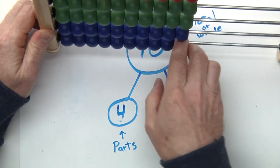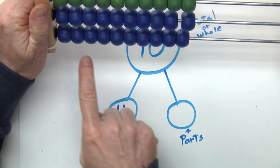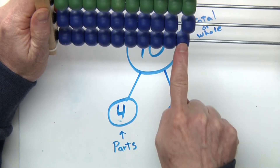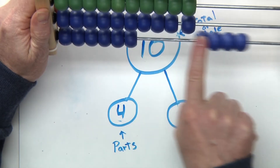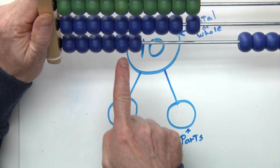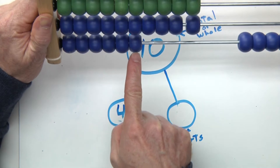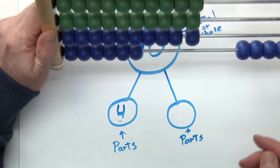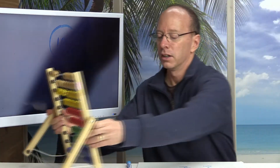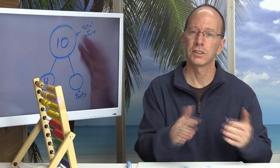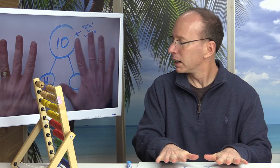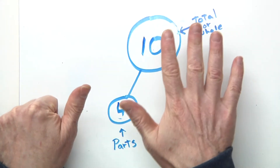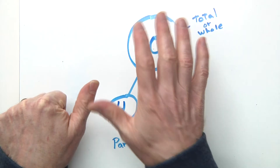One way you can use is one of these things right here. You could take the beads — you'll have 10 beads right here — and take away four: one, two, three, four, move those to the side. And then you can count what is left: one, two, three, four, five, six. So that is one way to find the answer.